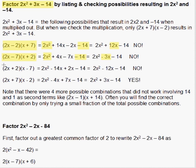We check (2x + 2)(x - 7). This gives us 2x² and -14, but the middle products are -14x and +2x, and that gives us -12x.